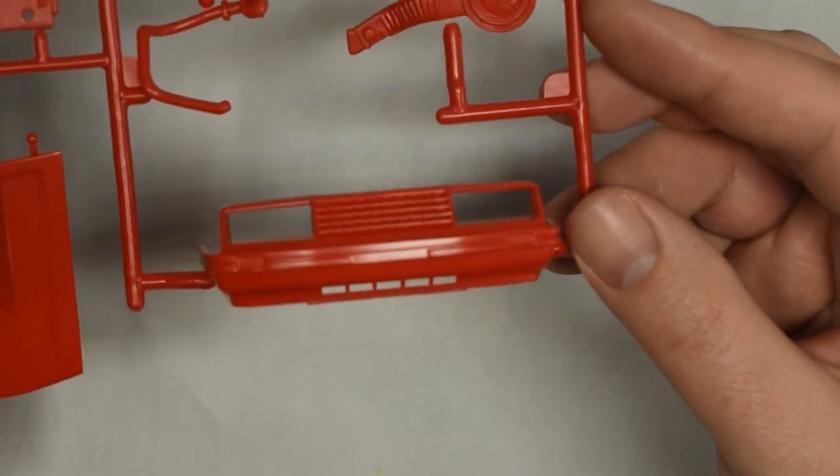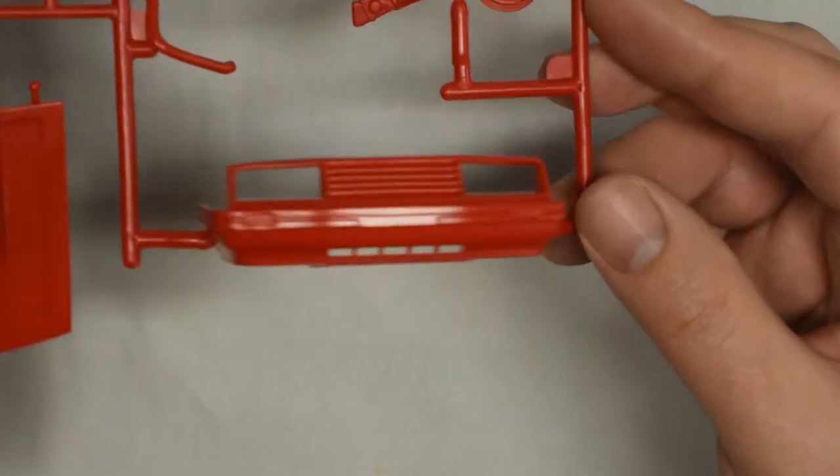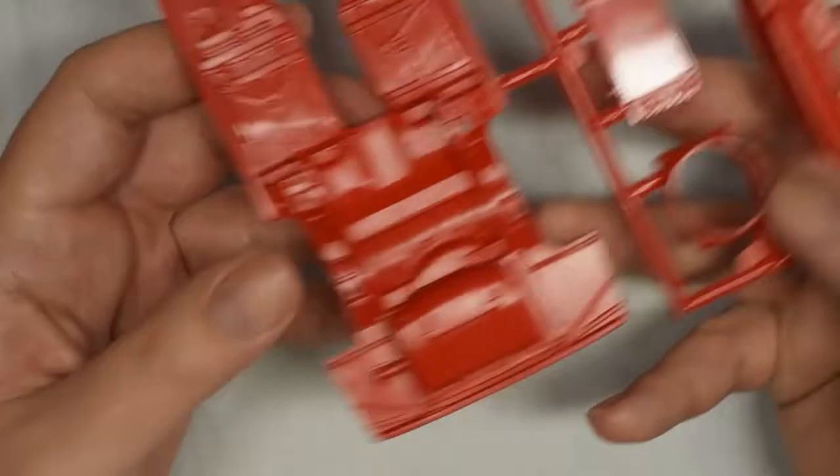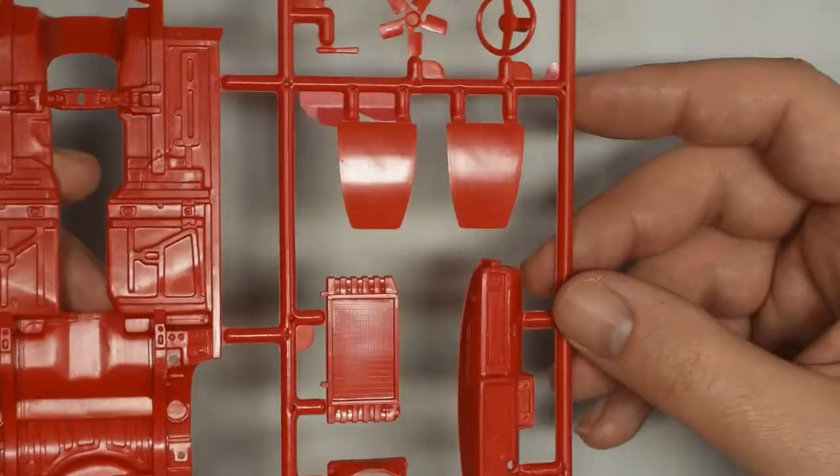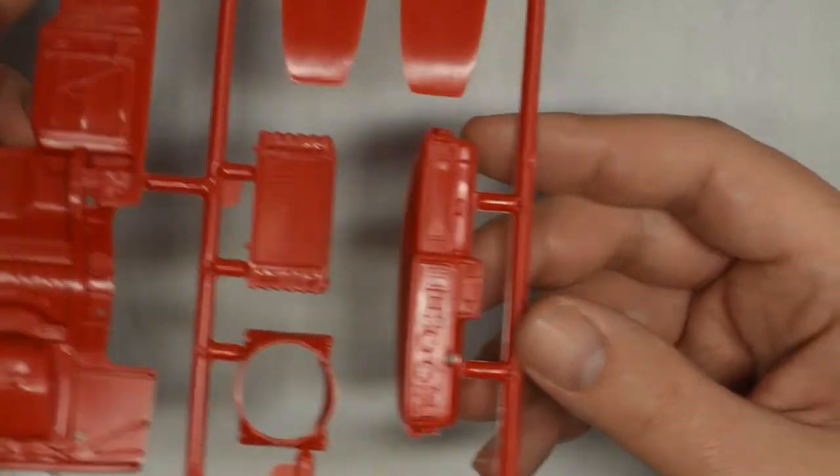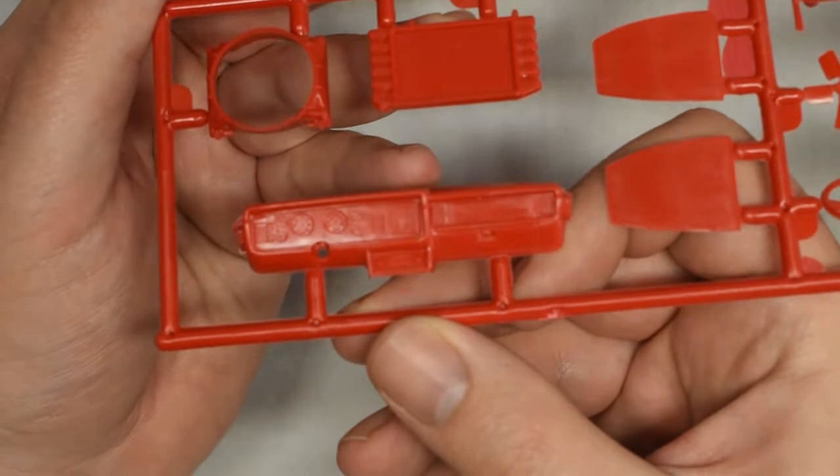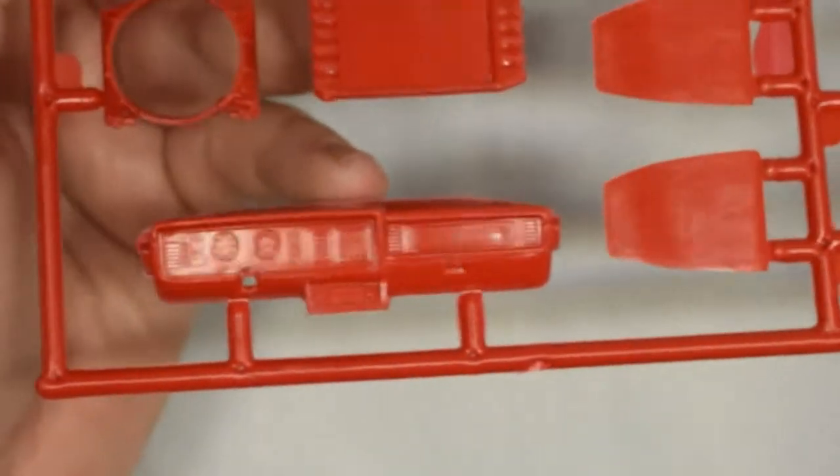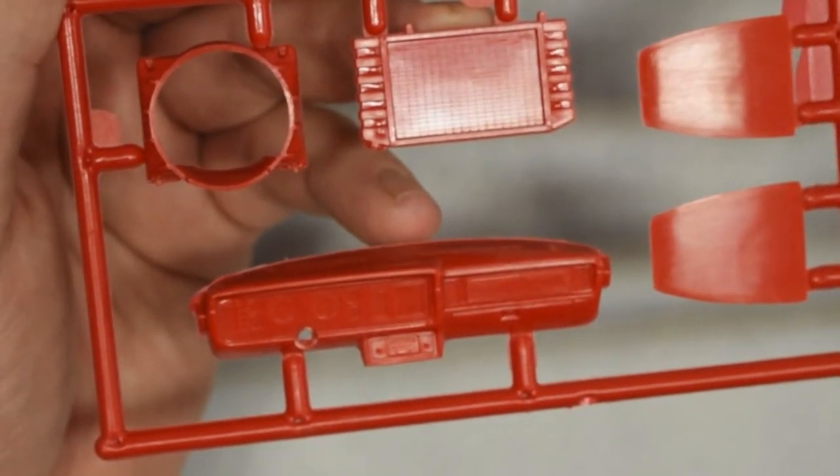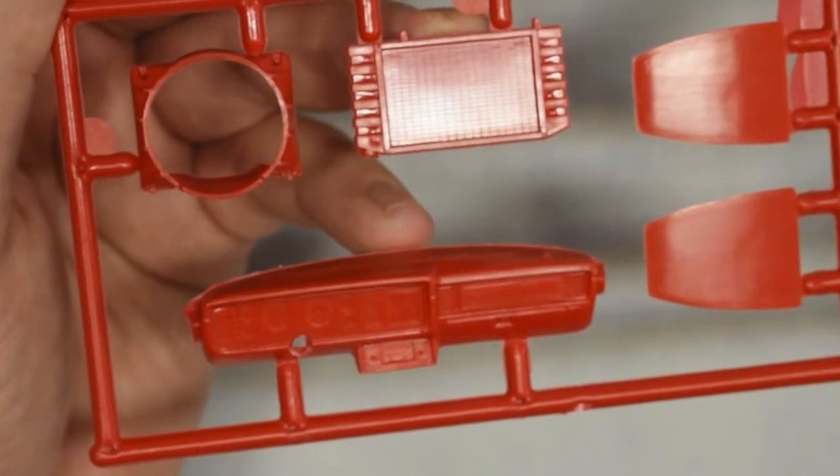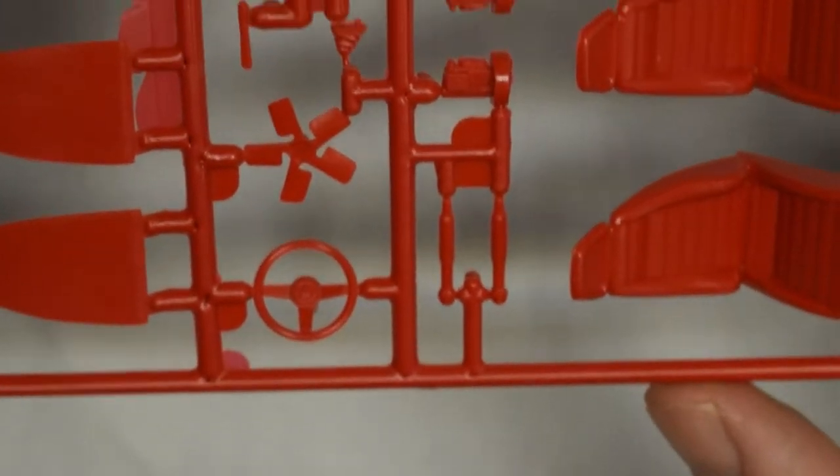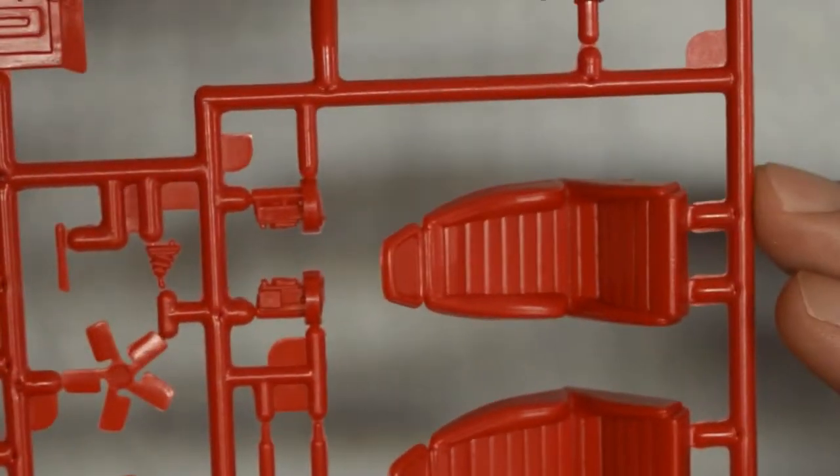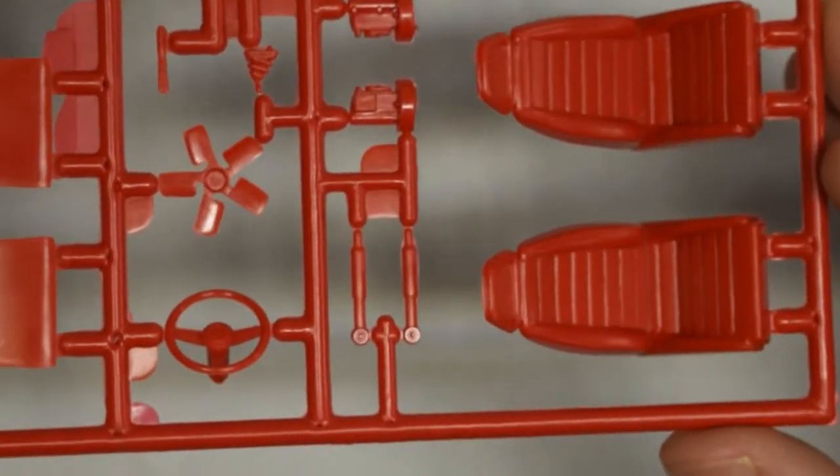And a front bumper. The grille is not molded open. And see the turn signals are molded in place. Okay, here's another sprue with the chassis. The chassis has nice, crisp detail. Seats, looks like the seat backs. We've got a radiator, the instrument panel. The speedometer and the tachometer and the gauges are slightly recessed. And we've got raised panel line detail for the heater controls and the radio.